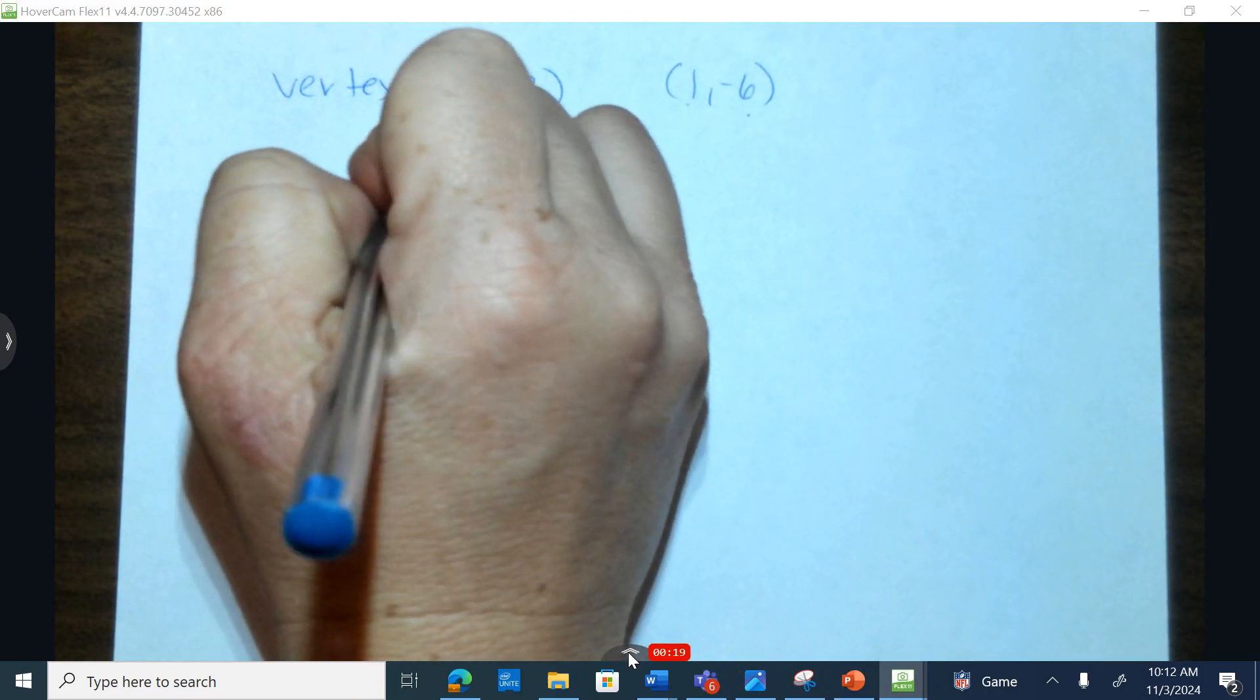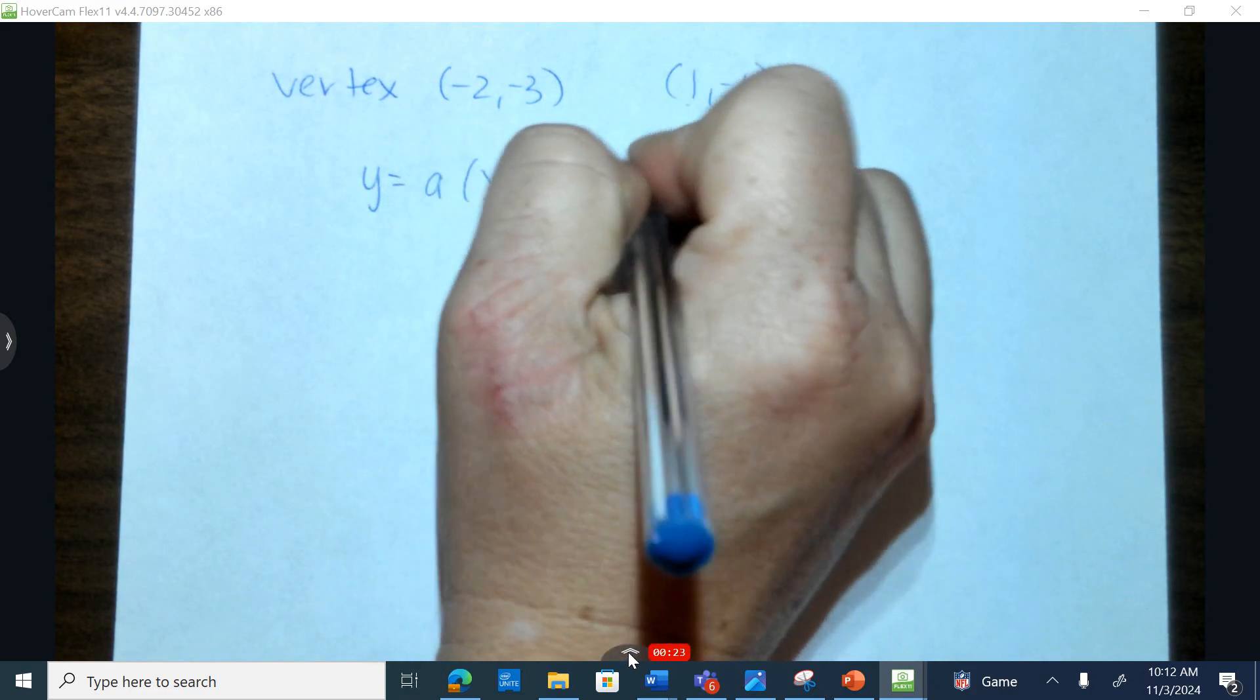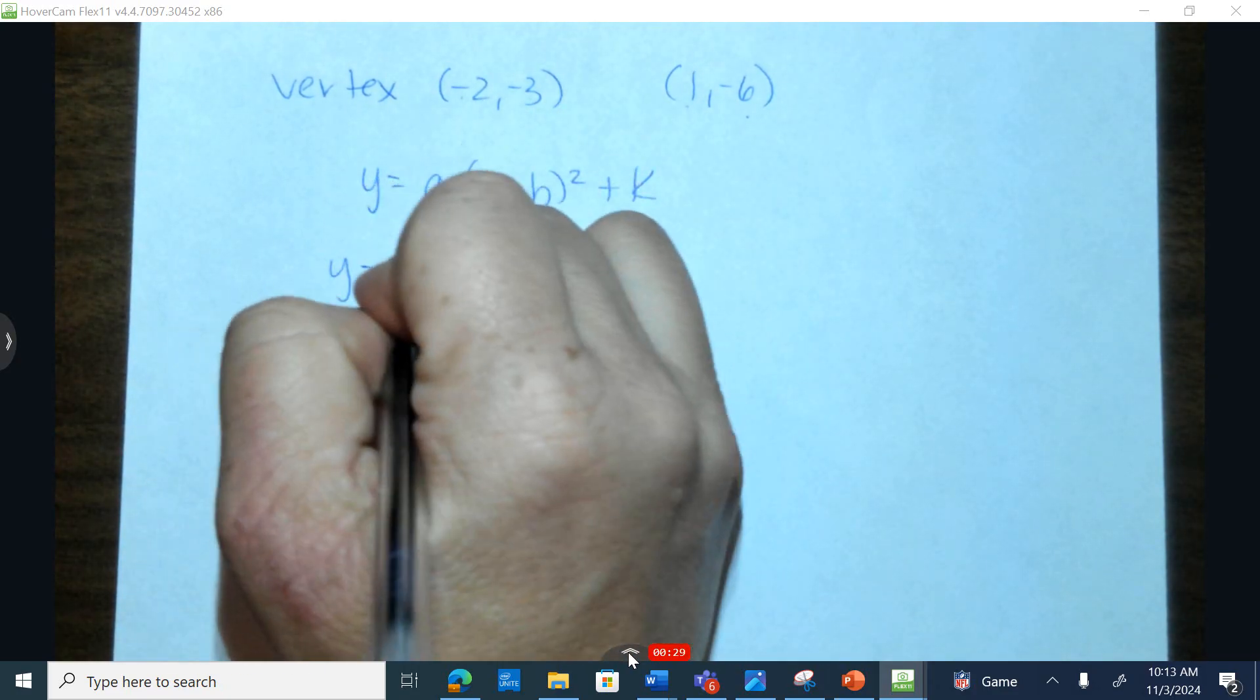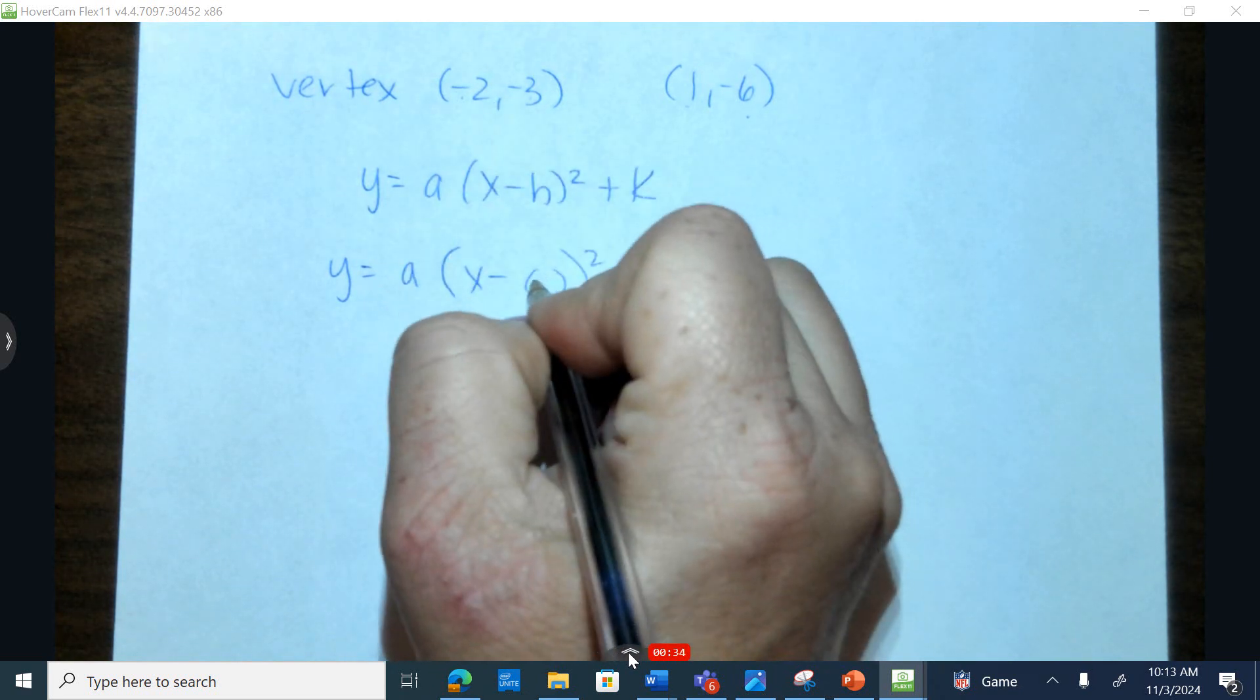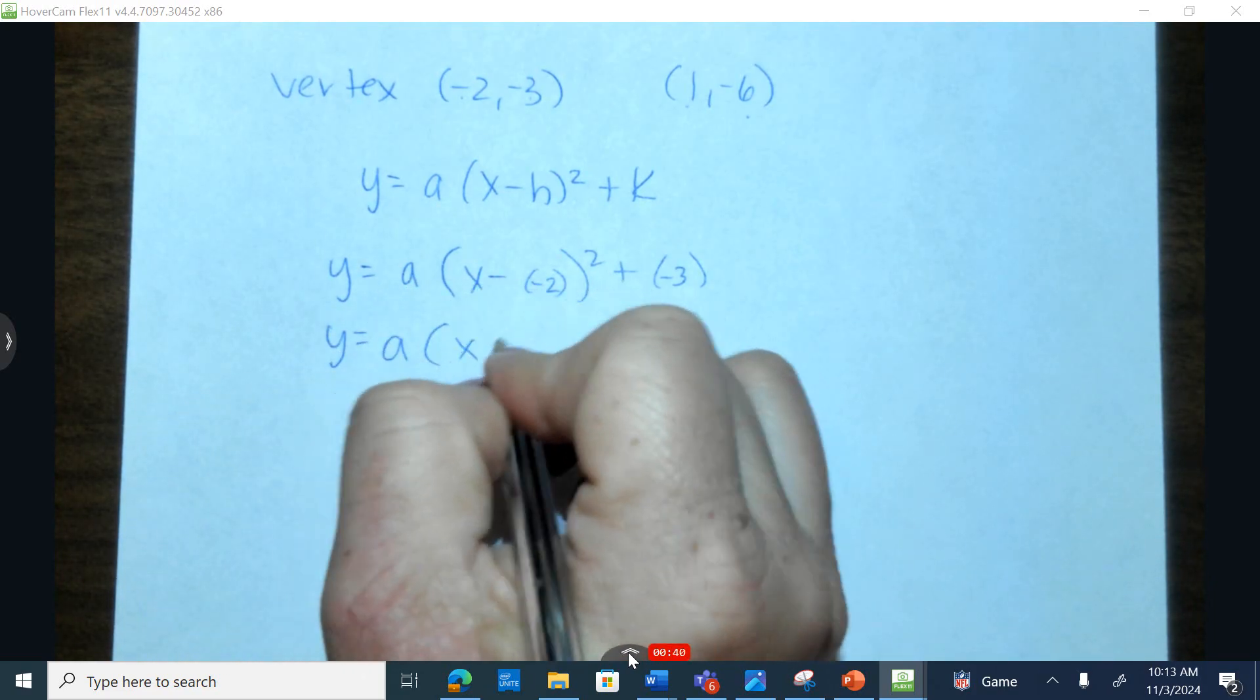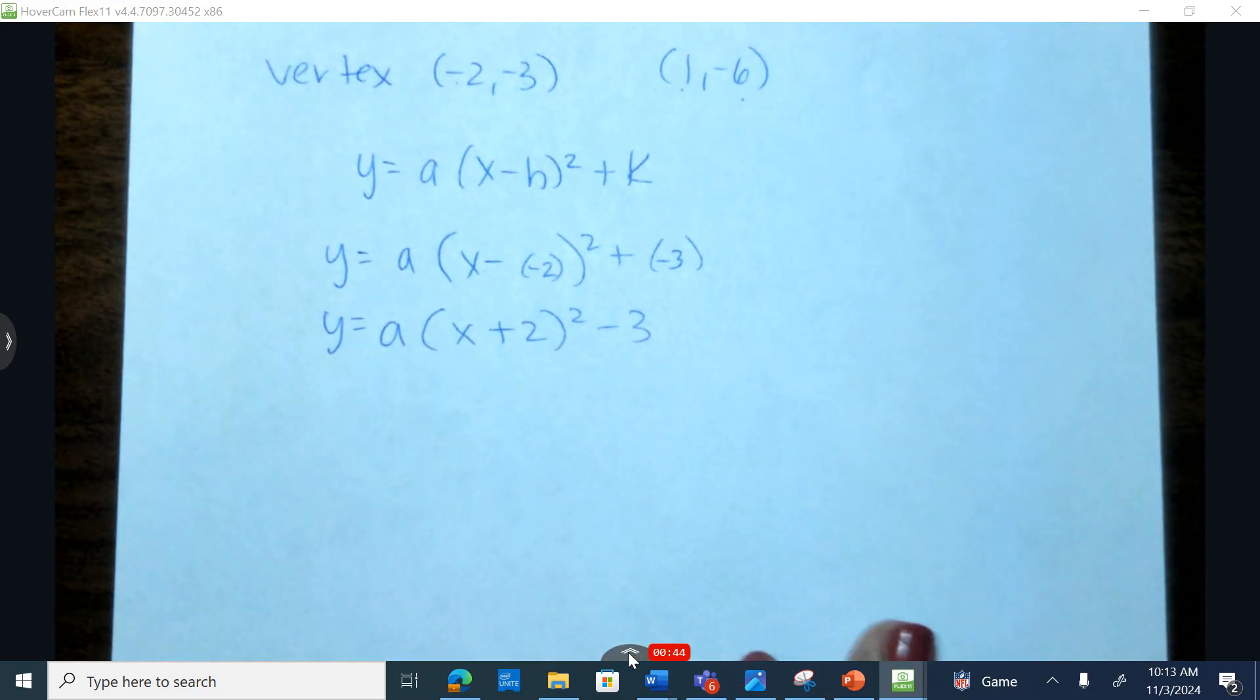Now it's important for you to know the general form in vertex form. I'm going to start by replacing the h and the k with a given value. So y equals a, x subtract, so replacing h with negative 2 and k with negative 3. y equals a times, two negatives make it positive, and a positive negative is a negative 3.